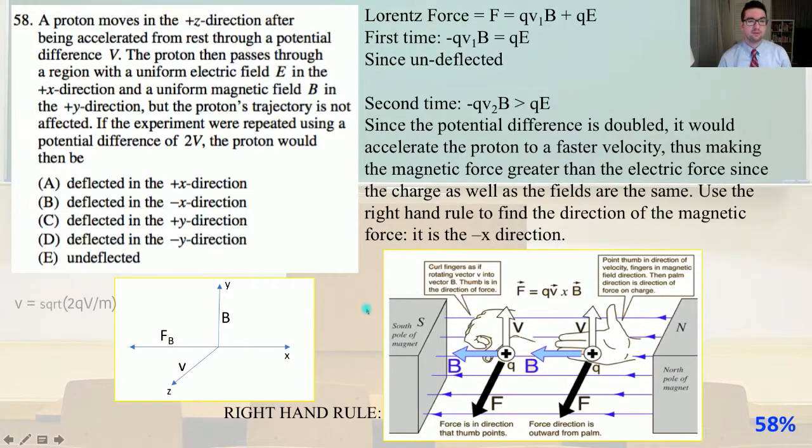Number 58. A proton moves in the positive Z direction after being accelerated from rest through a potential difference V. The proton then passes through a region with a uniform electric field E in the positive X direction and a uniform magnetic field B in the positive Y direction. But the proton's trajectory is not affected. If the experiment were repeated using a potential difference of 2V, the proton would then be?